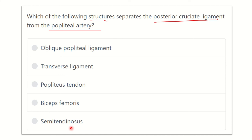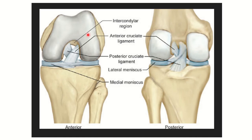We have to find out the structure which lies between the popliteal artery and the posterior cruciate ligament. The posterior cruciate ligament is very close and attached to the bones, and the popliteal artery is the second most common vessel which lies very close to the bones. In this picture we can see the two cruciate ligaments — the anterior cruciate ligament and the posterior cruciate ligament.